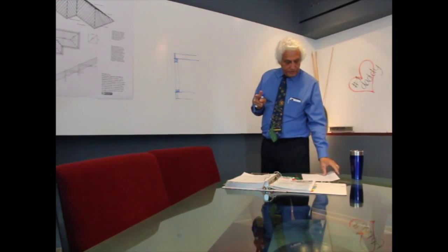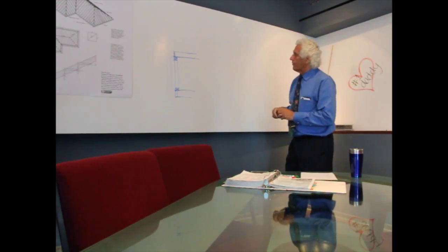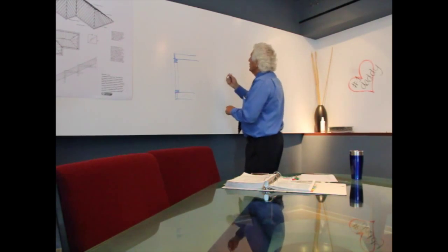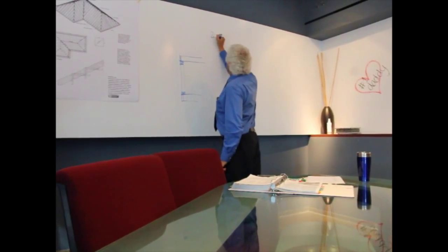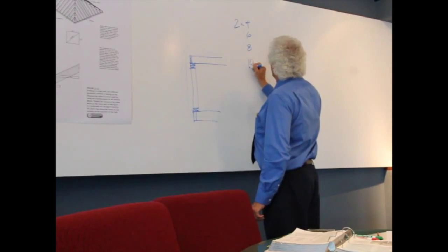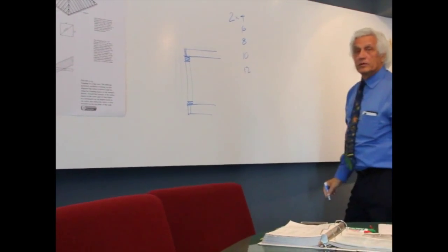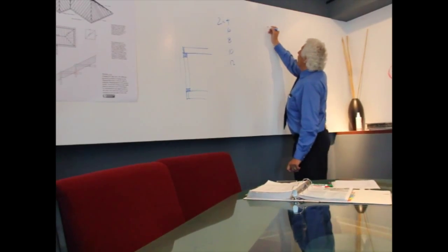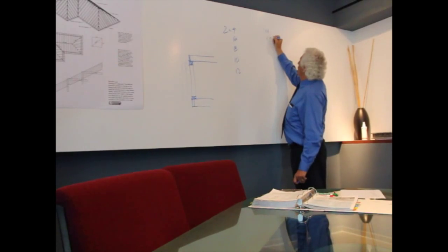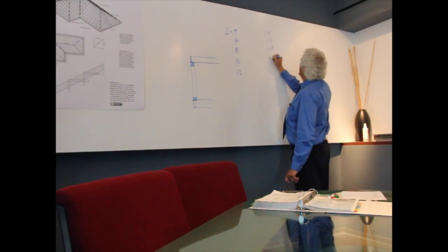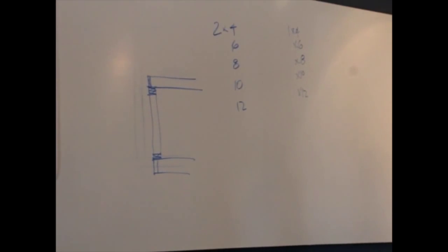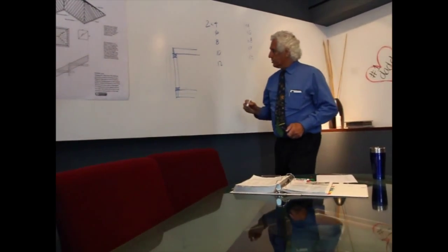There are two types of lumber referenced: dimensional lumber and board lumber. Dimensional lumber includes your two-by-fours, sixes, eights, tens, and twelves. Board lumber includes one-by-fours, one-by-sixes, one-by-eights, one-by-tens, and one-by-twelves. The difference is that the sizing is a nominal dimension, not the actual measurement.